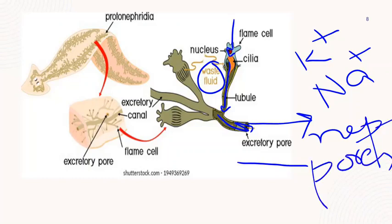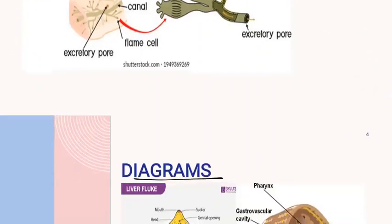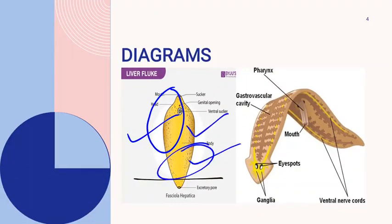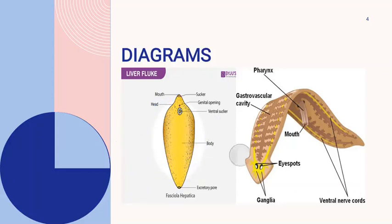The excretory pores are known as nephridiopores. These nephridiopores are present on the surface of the animal body, as you can see in this diagram. These are the pores present on the surface of the animal — these are nephridiopores, or excretory pores.